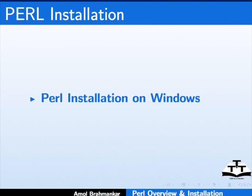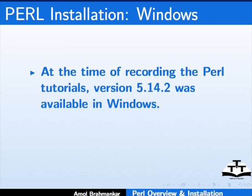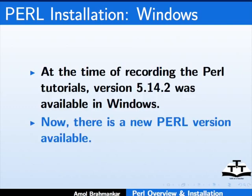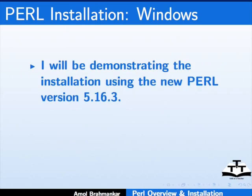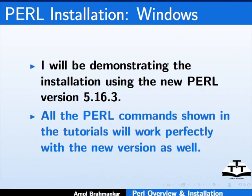Let us now go through the steps to install Perl on Windows operating system. At the time of recording the Perl tutorials, version 5.14.2 was available for Windows, but now there is a new Perl version available. I will be demonstrating the installation using the new Perl version 5.16.3. All the Perl commands shown in the tutorials will work perfectly on the new version as well.